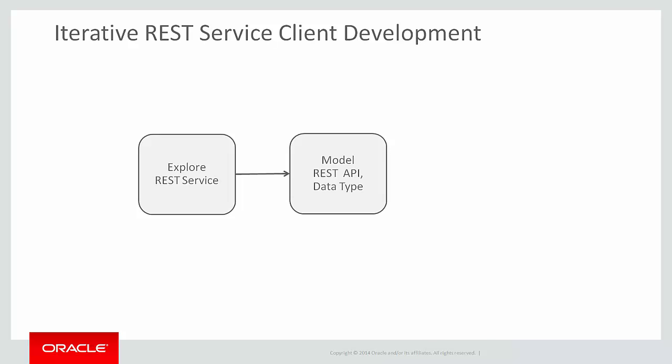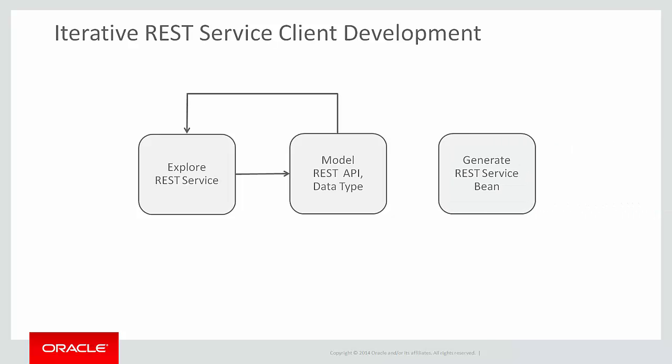Once the API is defined, you can copy it to the REST client to test the API. Once you have the APIs defined and tested, you generate the REST Service POJO Bean from the APIs. This is a one-click process. If later you add APIs or change existing APIs, you can simply recreate the REST Service Bean iteratively from the definition.